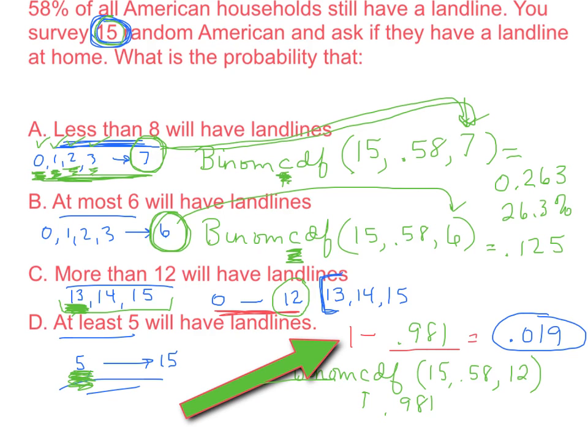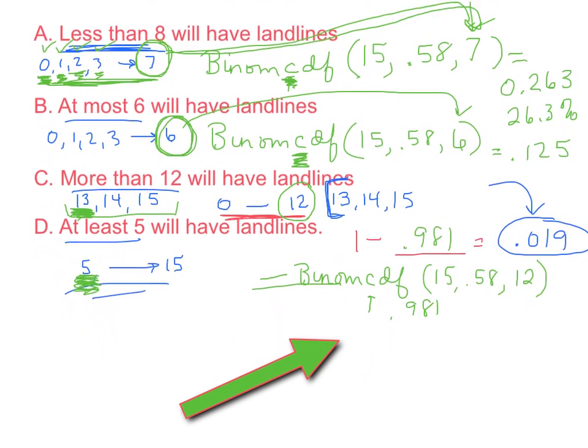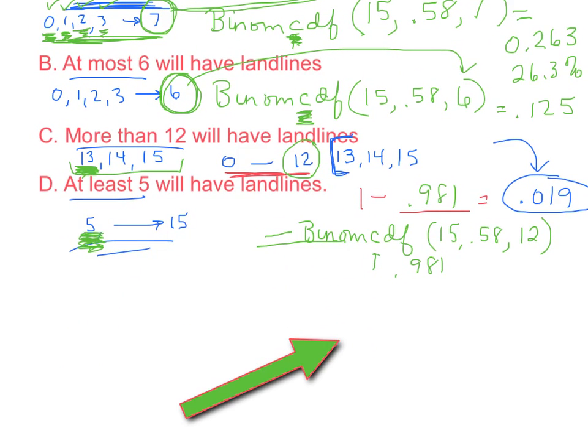So the probability that there will be more than 12 people will be 0.019. Now that should make sense to us because more than 12 is a lot of people. And if just barely over half of all U.S. households have a landline, it would be unlikely to have that many. So that's kind of logical. Okay, so that's using complement to do this. We still have to do part D. So I'm going to scoot everything up so that we have room for it.